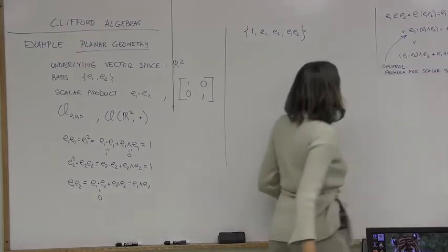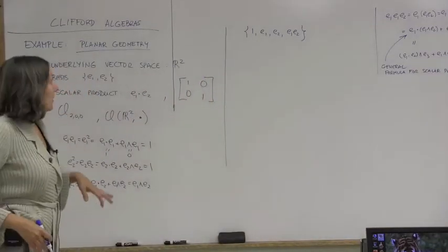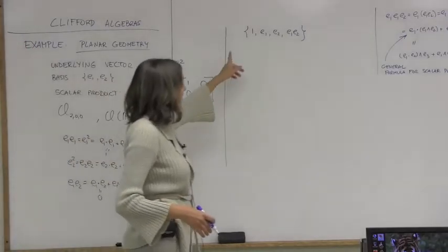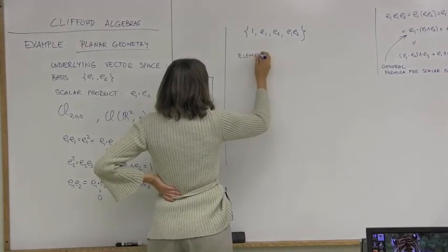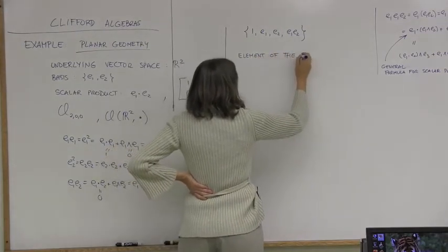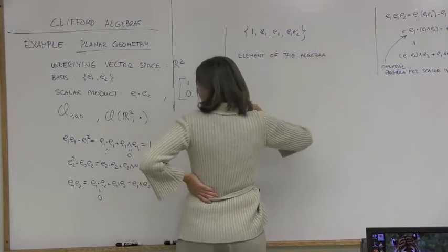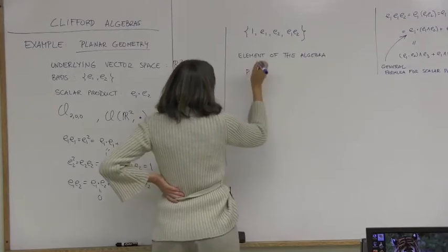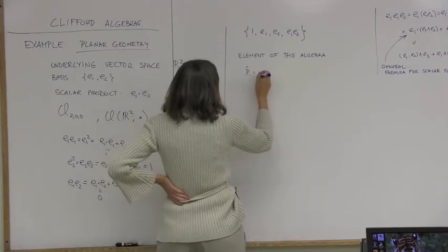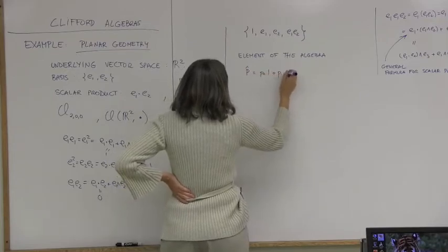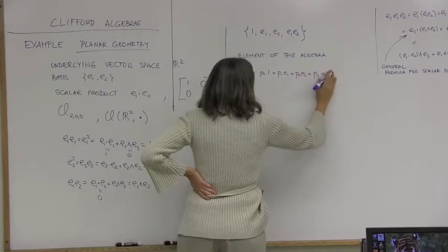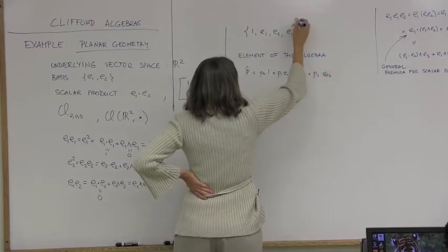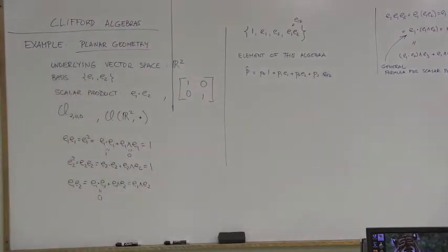This Clifford algebra as a vector space has dimension 4. A general element is just a linear combination of those basis elements. Let's call it P-hat: P0·1 + P1·E1 + P2·E2 + P3·E12, where E12 = E1∧E2.